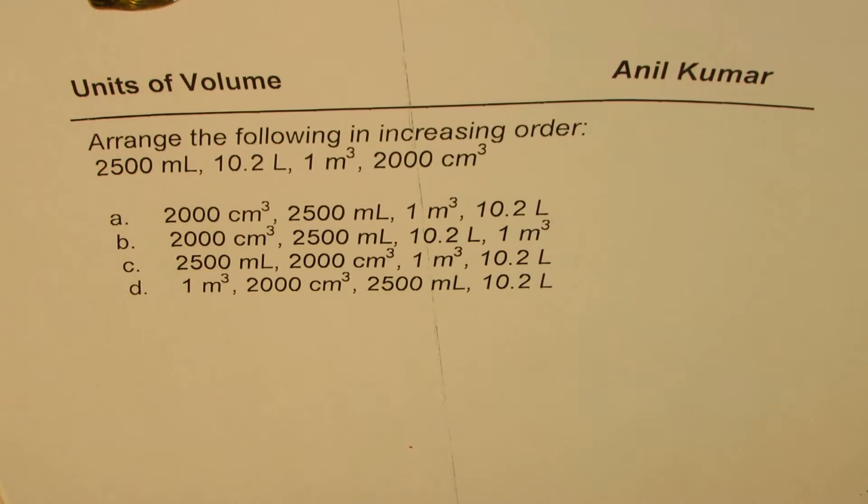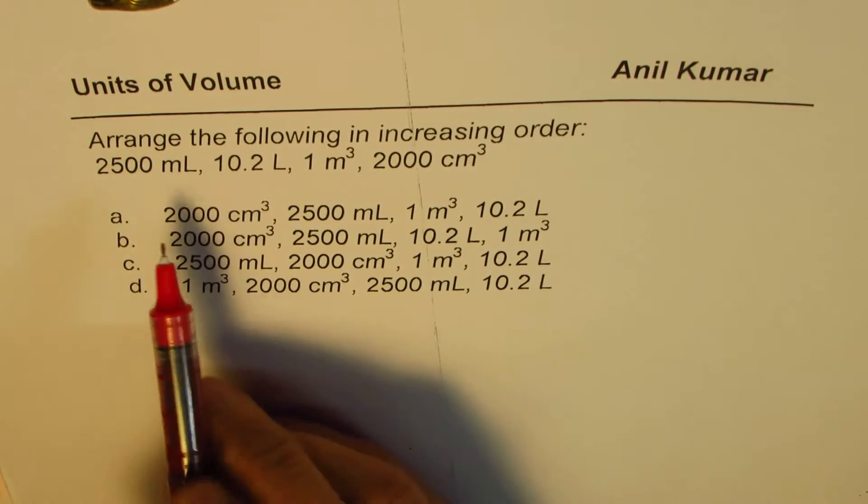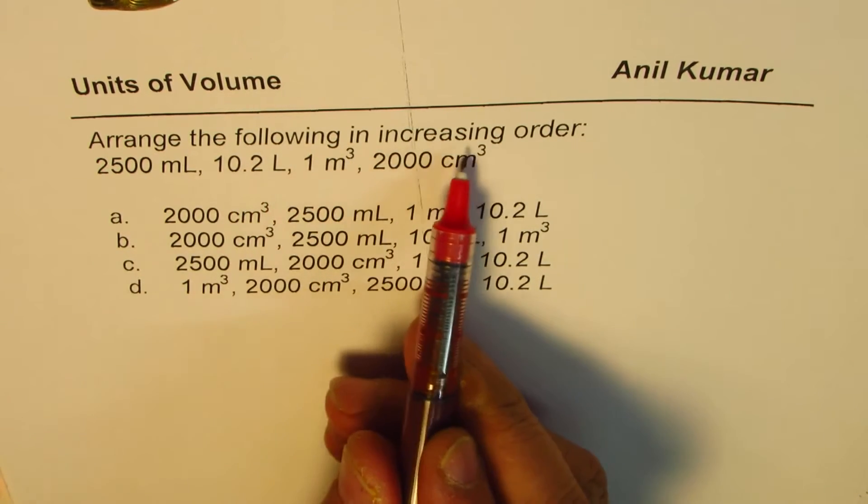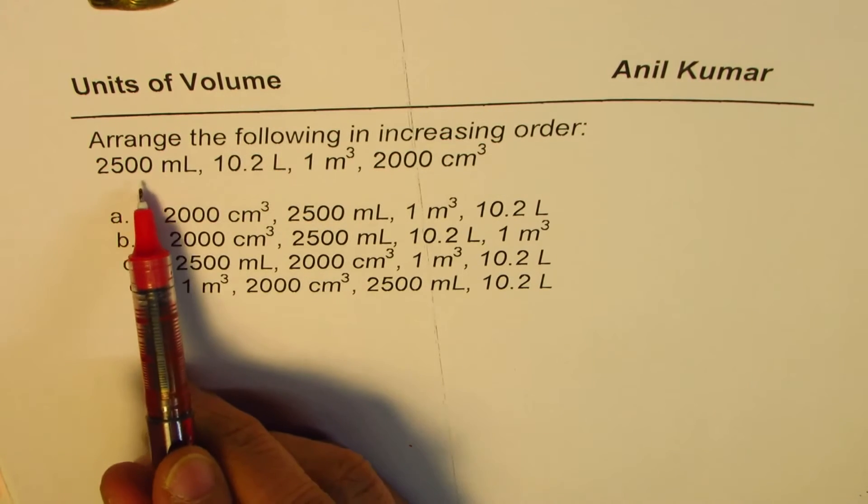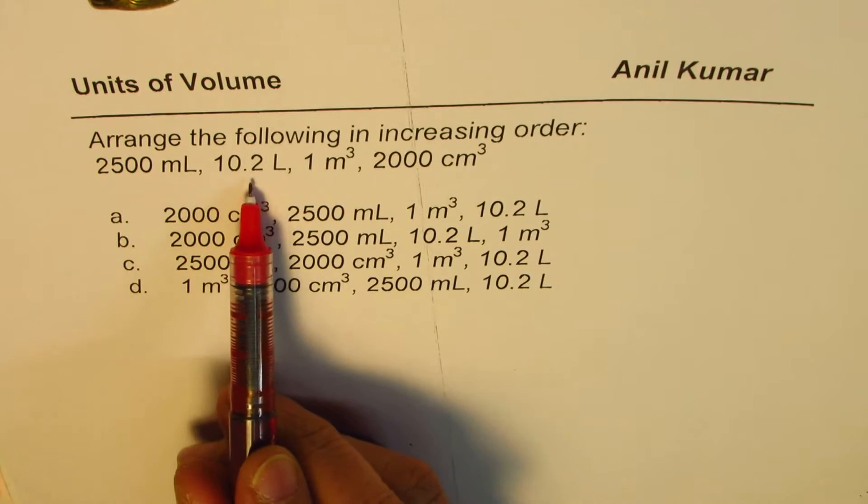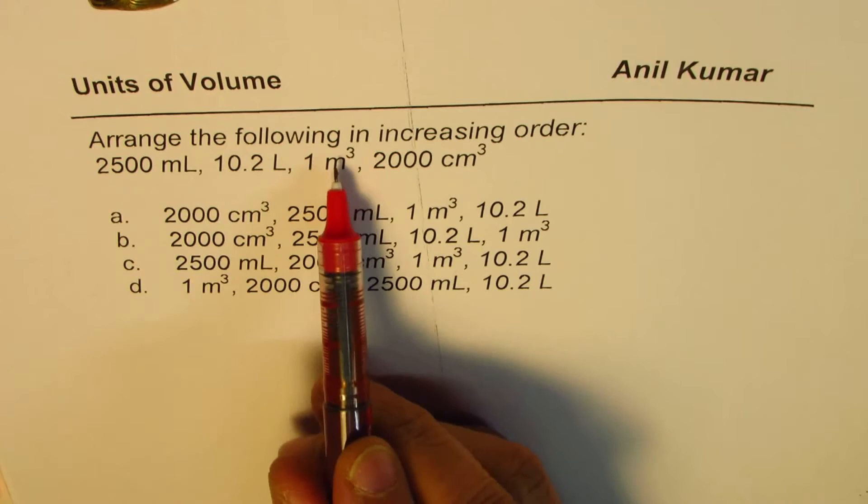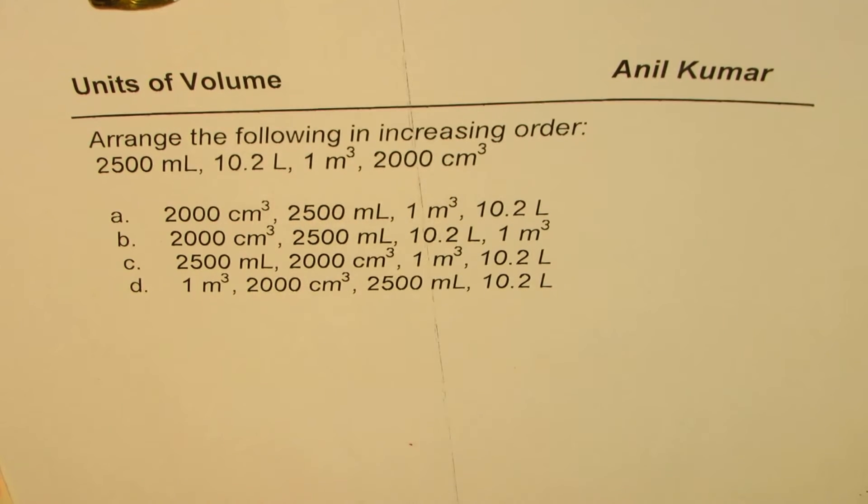I'm Anil Kumar sharing with you a multiple choice test question on units of volume. The question here is arrange the following in increasing order: 2500 milliliters, 10.2 liters, 1 meter cube, and 2000 centimeter cube. You are given four different options.